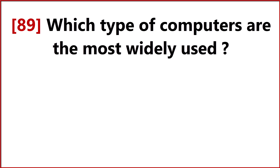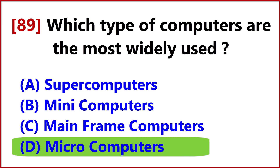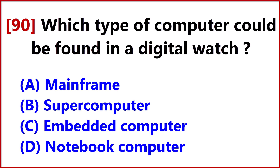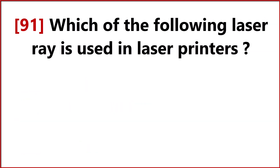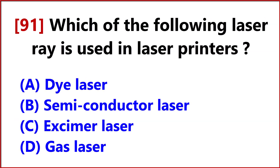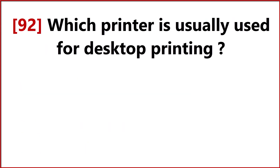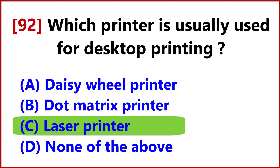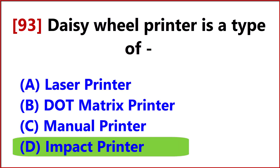Which type of computers are most widely used? Answer, Option D, microcomputers. Which type of computer could be found in a digital watch? Answer, Option C, embedded computer. Which of the following laser ray is used in laser printers? Answer, Option B, semiconductor laser. Which computer is normally used for desktop printing? Answer, Option C, laser printer. AC wheel printer is a type of Answer, Option D, impact printer.